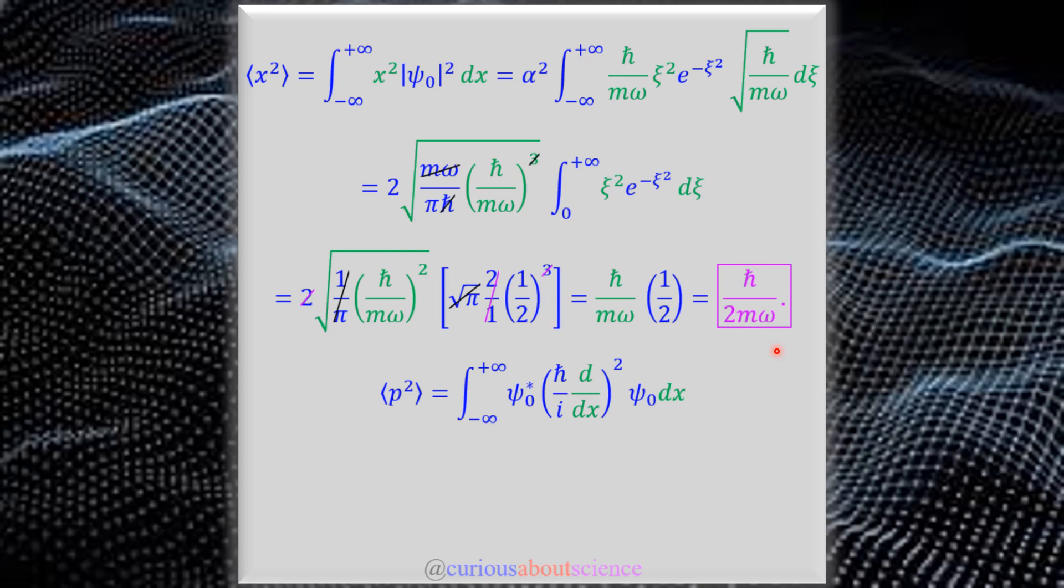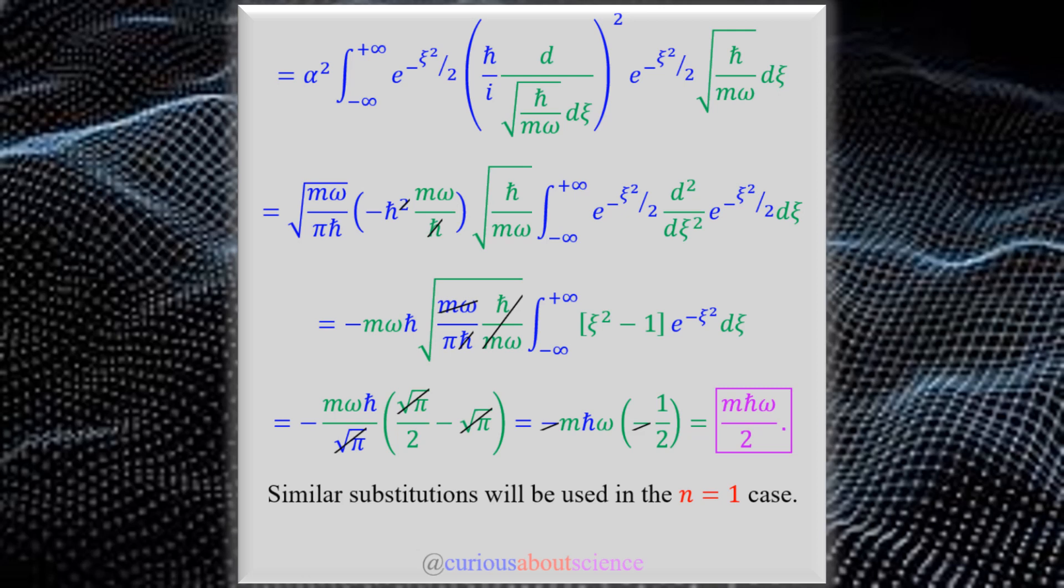Now, momentum, on the other hand, is a little bit different. Since it is a differential operator, we need to be careful on the substitutions. So knowing that this is the momentum operator, we can't just have psi star psi, we have to have the operator taking the derivative on a non-conjugated function here and then multiply in the conjugated function. So be aware, that's going to get messy quick.